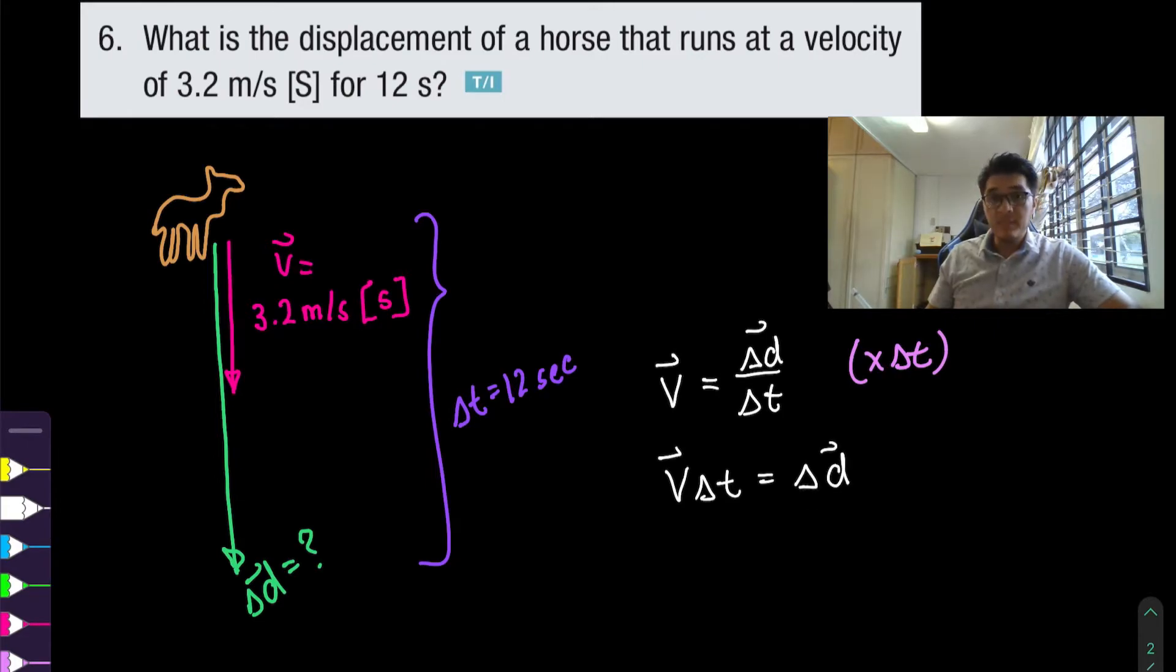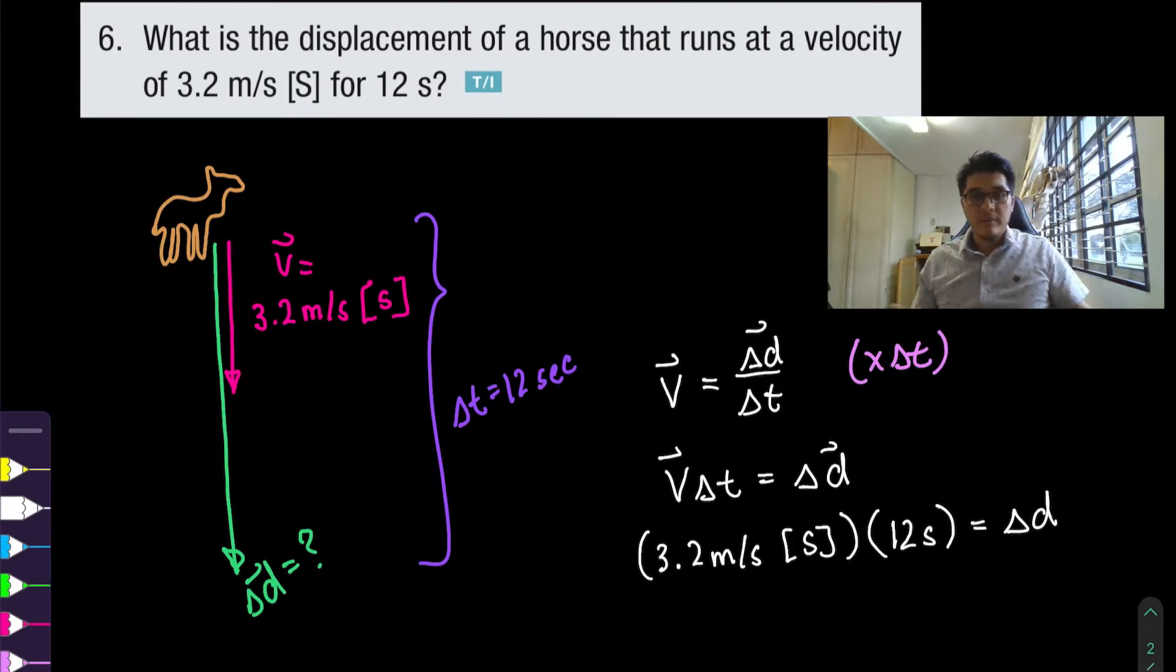And now let's put in what we were given. 3.2 meters per second south times 12 seconds equals the displacement. Which is going to be 38.4 meters in the south direction.